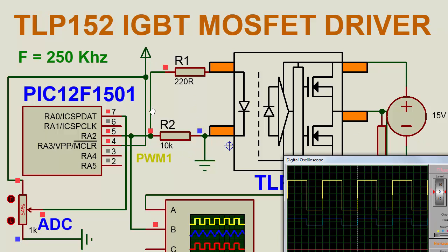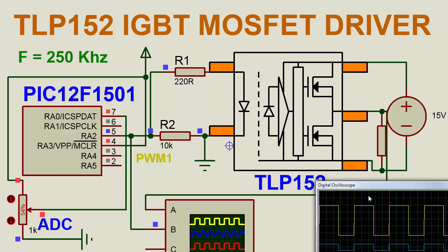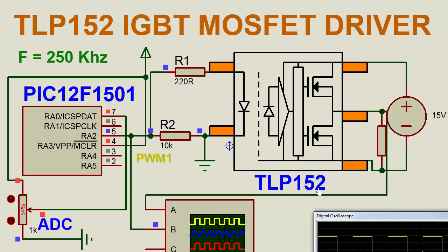If we use 5V PWM, the MOSFET and IGBT cannot be used properly. But if you give more than 6V, 7V, or 8V, the IGBT and MOSFET will work properly. That is why we use TLP152 to drive the IGBT and MOSFET.